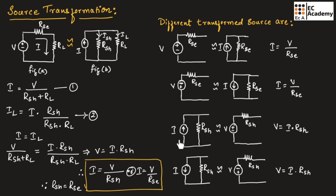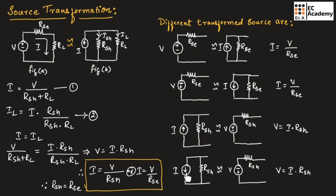In the same way, a current source can be replaced by a voltage source by connecting the resistor in series. After conversion, the polarities of the voltage source depend upon the direction of current flow. If the current flows towards the upper side, the polarities across the voltage source will be positive and negative. If the direction of the current is downward, the polarities across the voltage source will be minus and plus.